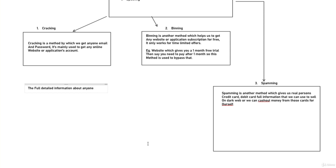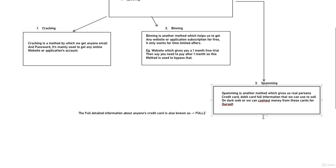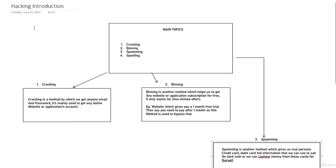The full detailed information about someone's credit card is also known as 'fulls.' If you're becoming a hacker you need to know about this. A 'full' contains someone's real name, father's name, mother's name, SSN, and stuff like that. You can do so many more things using spamming — you can buy bitcoins, you can do a lot of crazy stuff. Spamming is the best thing if you really want to earn money.